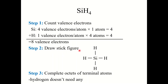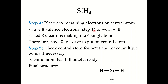Step two: draw a stick figure, putting the least electronegative atom in the center. Hydrogen can never be the central atom since it can only form one bond, so put Si in the center and draw single bonds to the hydrogen atoms. Step three: complete the octets of the terminal atoms. Hydrogen doesn't need an octet — it doesn't need any more than it already has. Step four: place any remaining electrons on the central atom. We had eight valence electrons; we have used eight making the four single bonds, so there are none left over to put on the central atom.